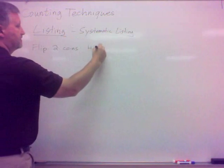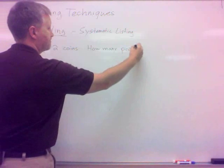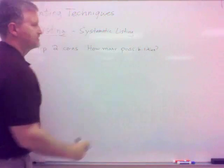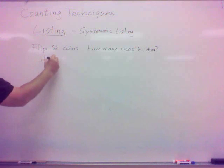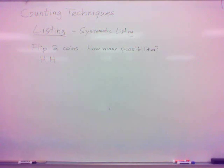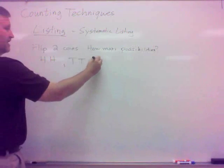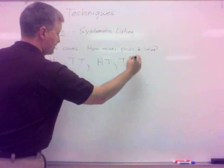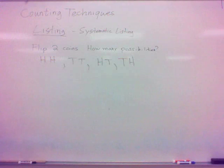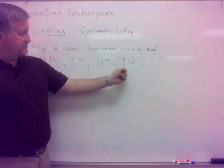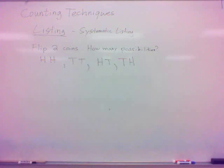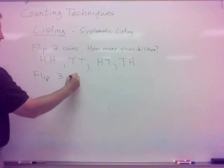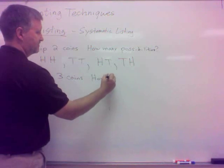Especially when you get larger groups, you want to have some type of system. So let's start with the coins. If I flip two coins, how many possibilities are there? You got four? Okay, so we list those out. Here's one way of doing it. I can get two heads, I can get two tails, and then I can have heads and a tail. And note that we are making a distinction between first coin and second coin, so heads-tails is going to be different than tails-heads. So yes, there are four different outcomes here.